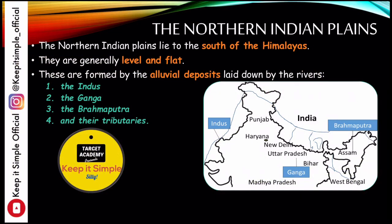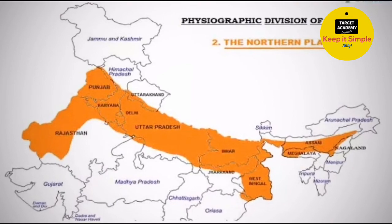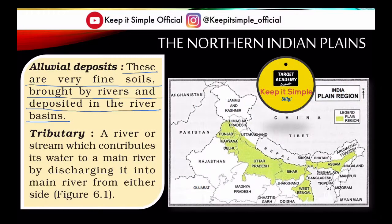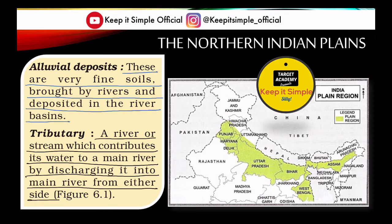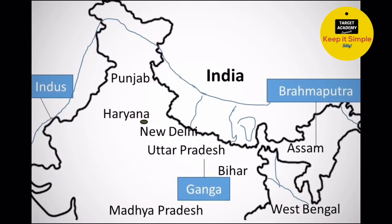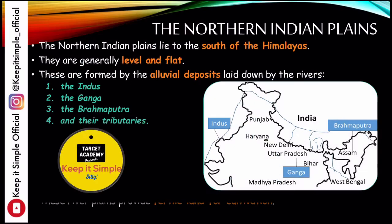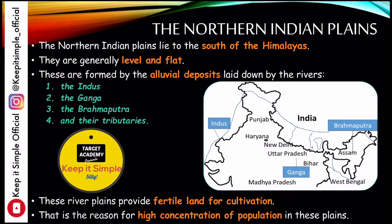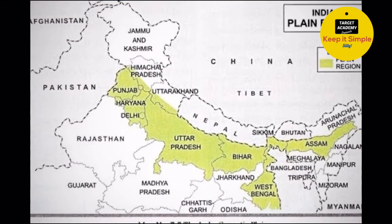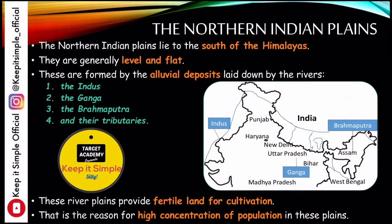Three important rivers contributed to making these plains: the Indus, the Ganga, and the Brahmaputra — along with their tributaries. A tributary is a river or stream that contributes water to a main river. These rivers deposited alluvial material, making the land very fertile and perfect for cultivation. Because of these benefits — flat land, fertile soil, water availability, easy transportation and construction — many people live in the Northern Indian Plains. It has a very high concentration of population.